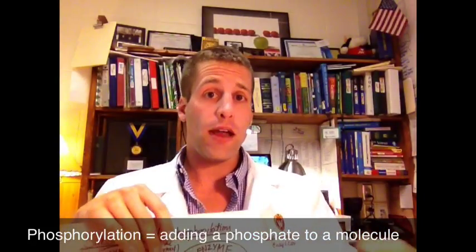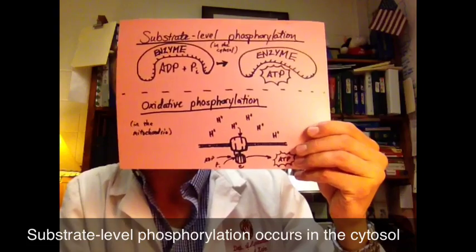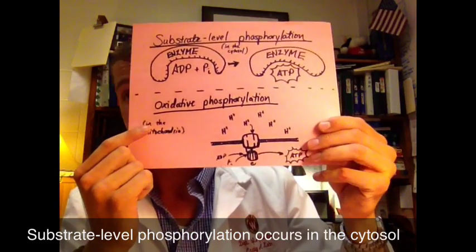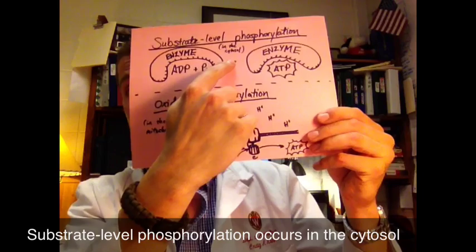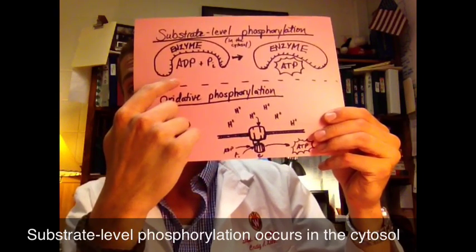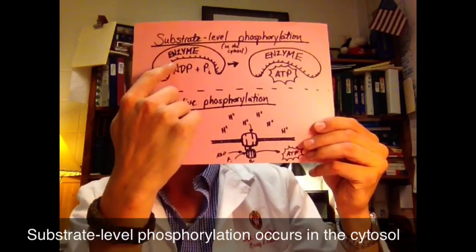There are two kinds of phosphorylation. We have substrate-level phosphorylation and oxidative phosphorylation. Substrate phosphorylation occurs in the cytosol. And in substrate-level phosphorylation, ADP and PI go into an enzyme, and that enzyme combines them into ATP.